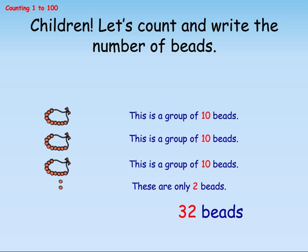Children, let's count and write the number of beads. Row 1, this is a group of 10 beads. Row 2, this is a group of 10 beads. Row 3, this is a group of 10 beads. Row 4, there are only 2 beads. So the total number of beads in this picture are 32.